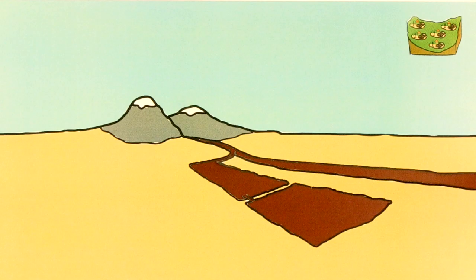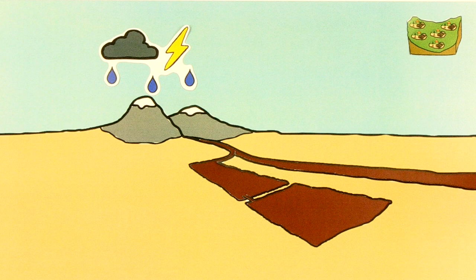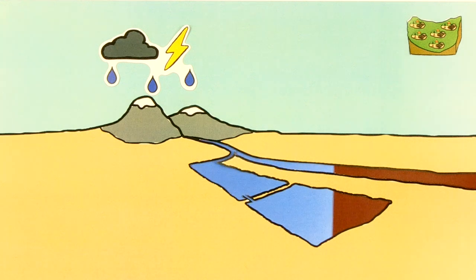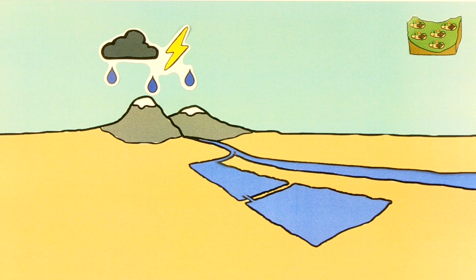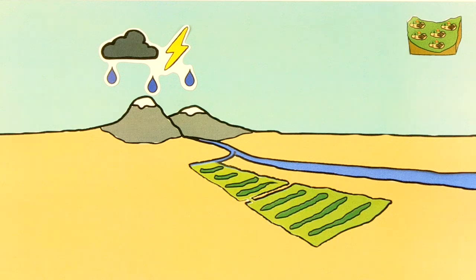Ephemeral stream diversion systems divert water from seasonally flooded channels to large low-lying areas, where the water infiltrates and provides enough moisture for crop growth.